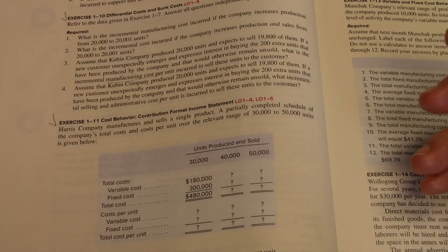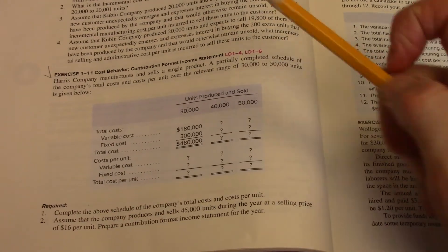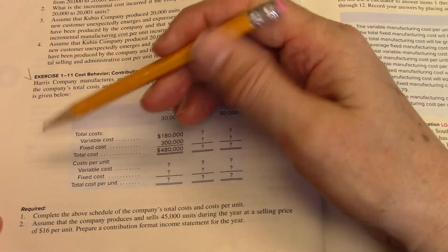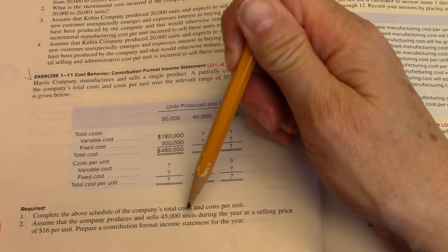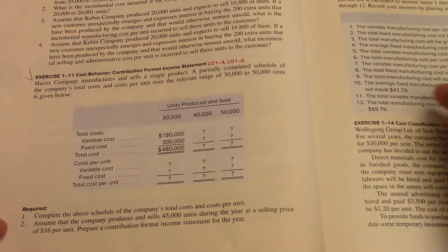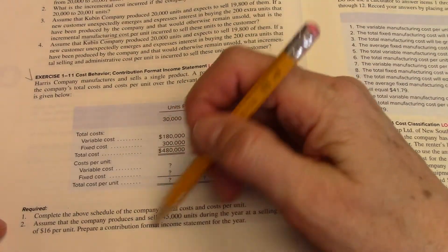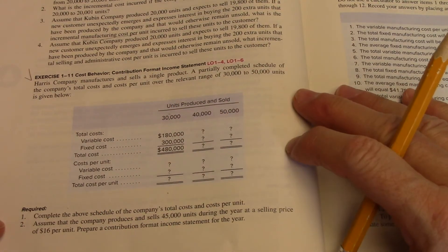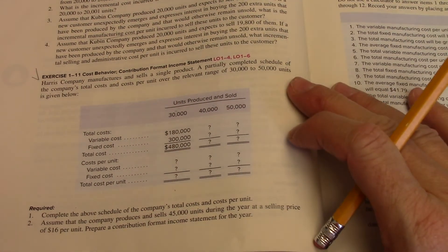So that's how we fill in the chart. Now, it does ask us another question here. It says, assume that the company produces and sells 45,000 units during the year at a selling price of $16 per unit. Prepare a contribution format income statement for the year.